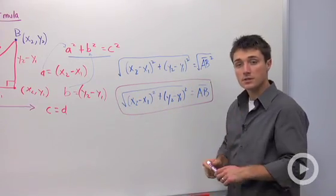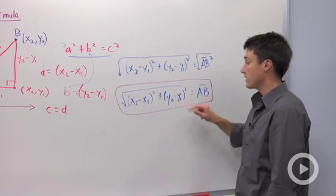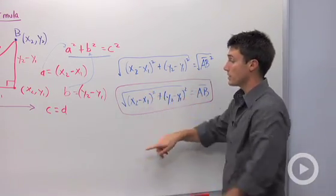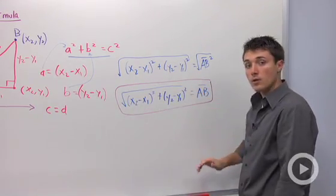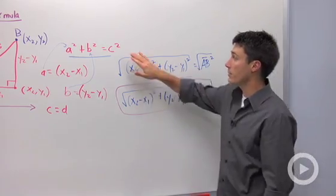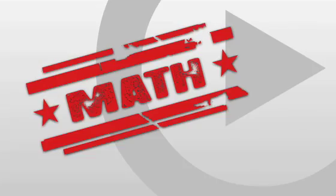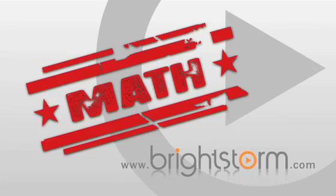So the keys to using this formula are subtracting your X's, subtracting your Y's, squaring those, and then taking the square root. We got this formula by using the Pythagorean theorem.